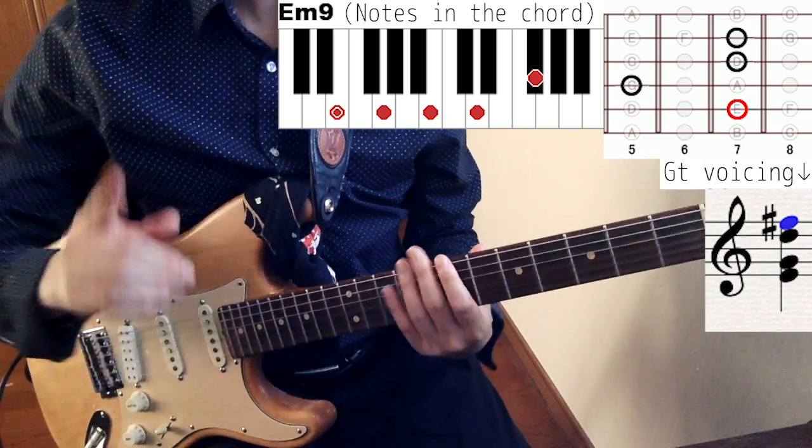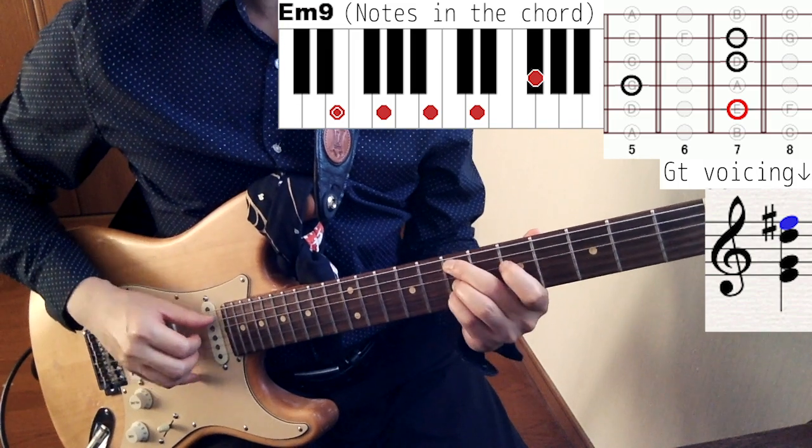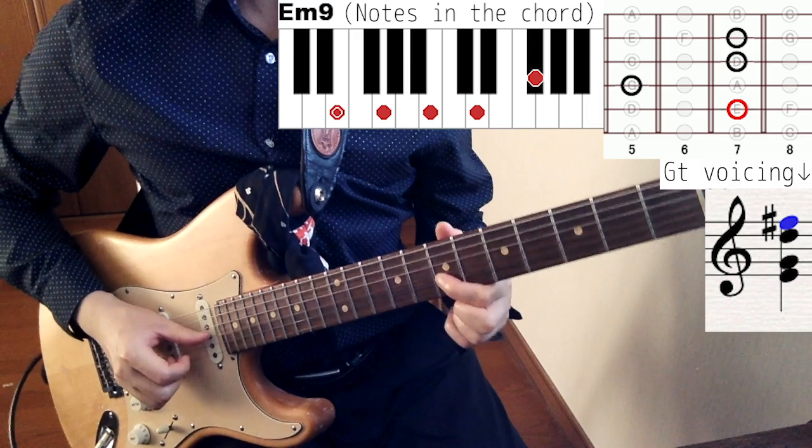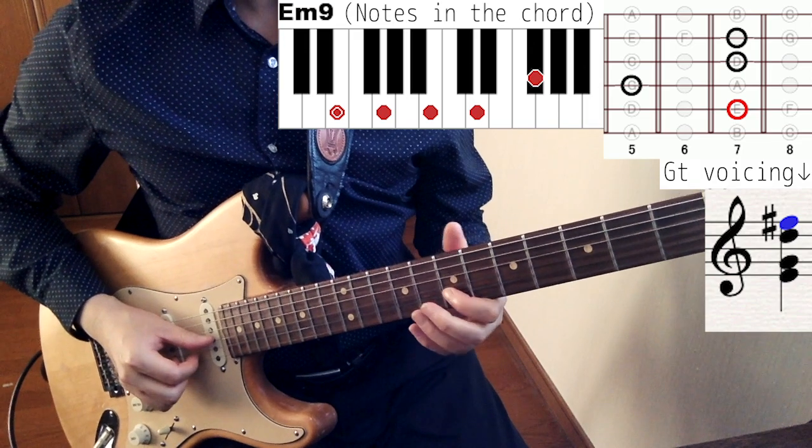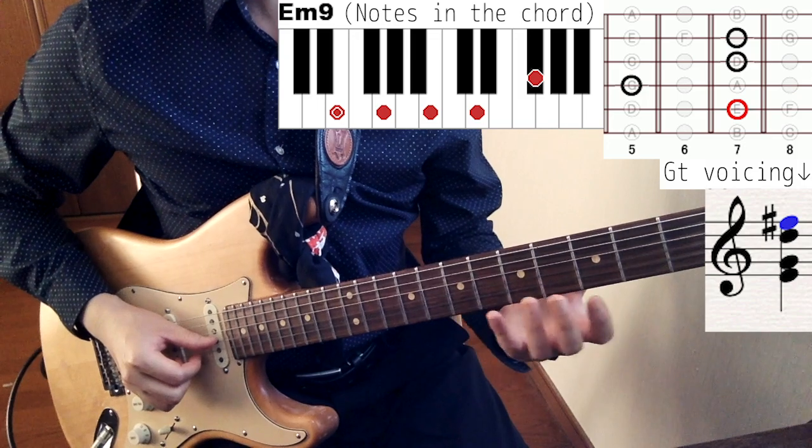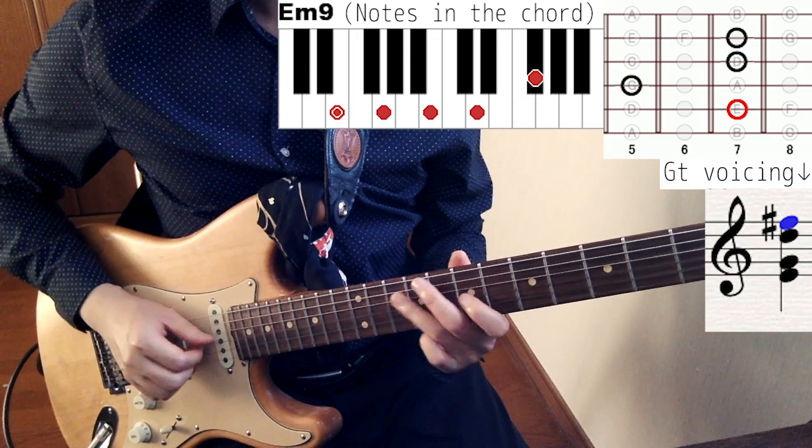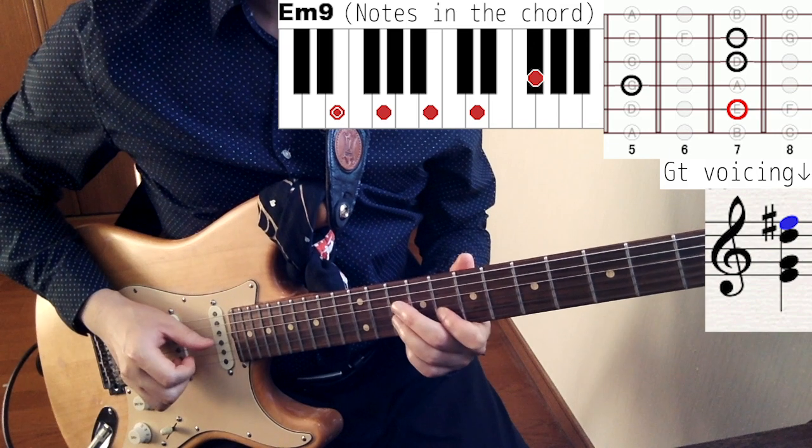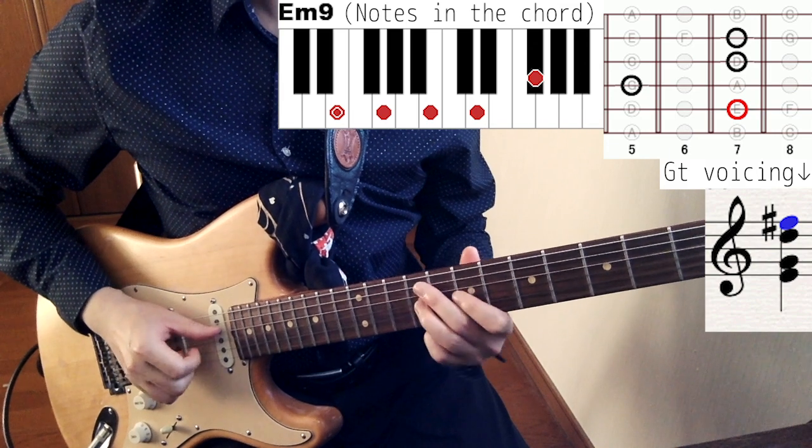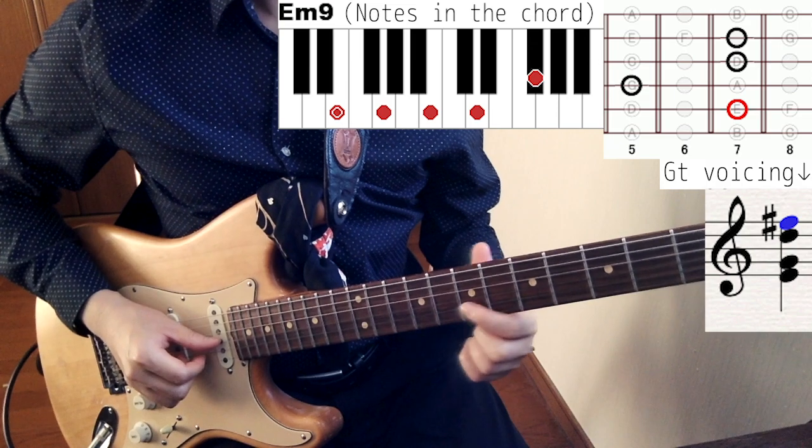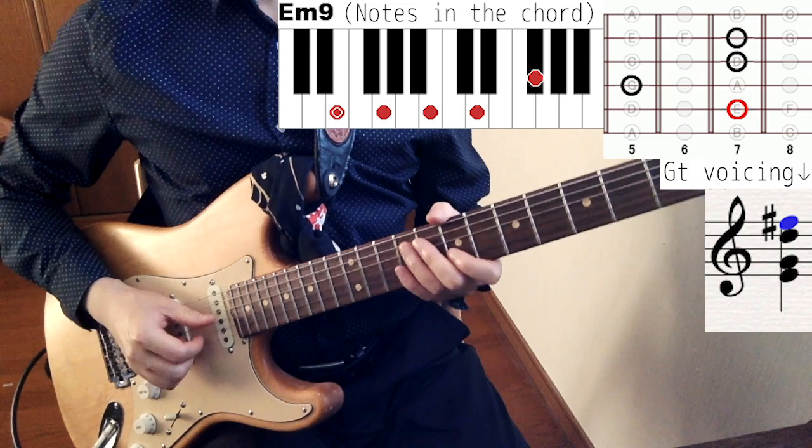And the reason is because the 9th of E minor, which is F sharp, is not in the scale. It's not in the C major scale, in this case, because we are in C major. So this is like C, D, E, F, G. So F sharp is not in the scale.